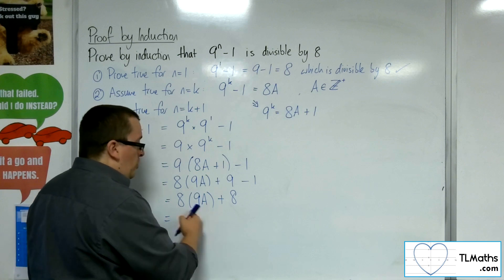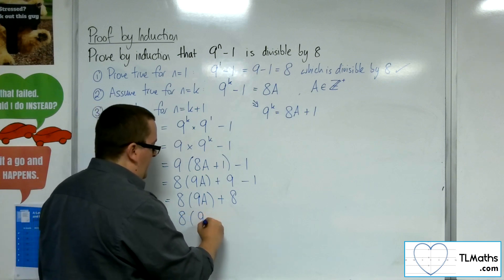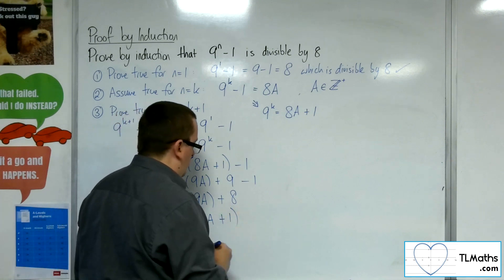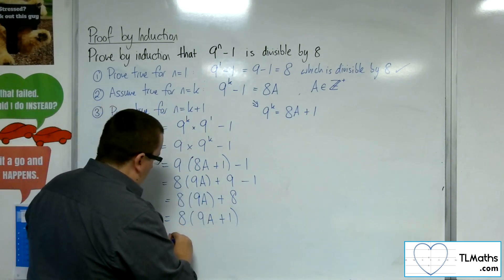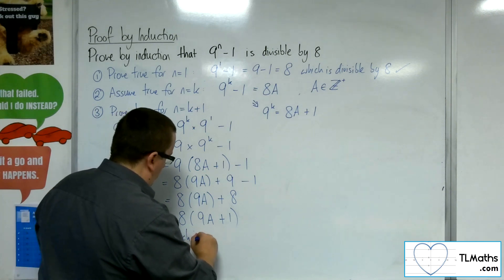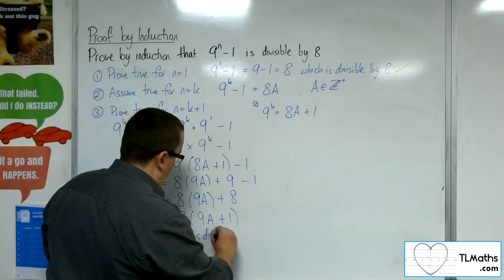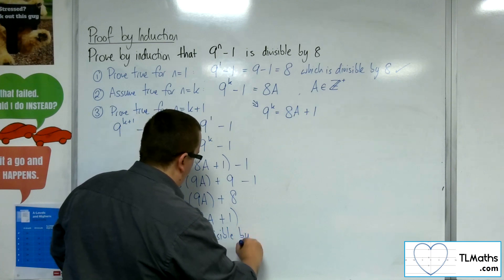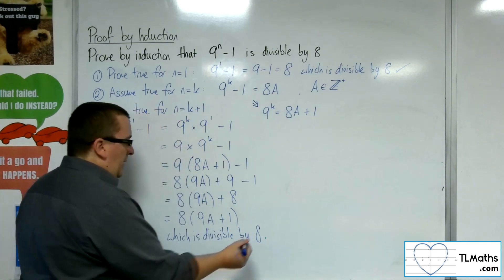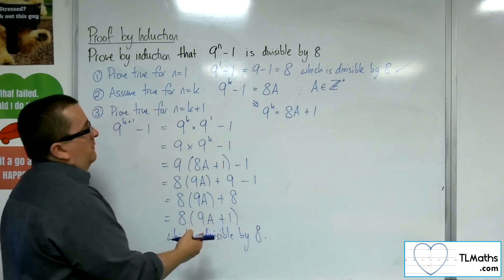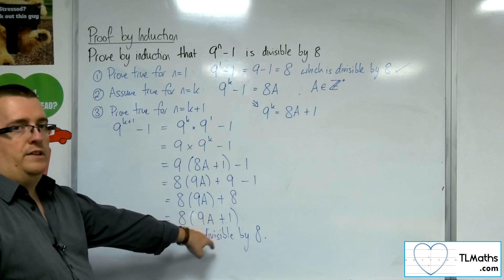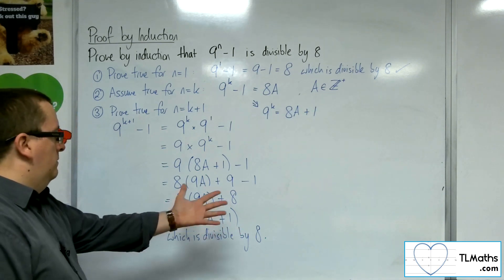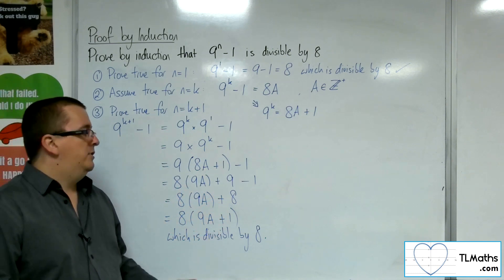So I could then factorise that by bringing the 8 out and having 9a plus 1. Like so. Which is divisible by 8. Because as a is a positive integer, 9a plus 1 is also a positive integer. So I've got 8 lots of that, which is clearly a multiple of 8.